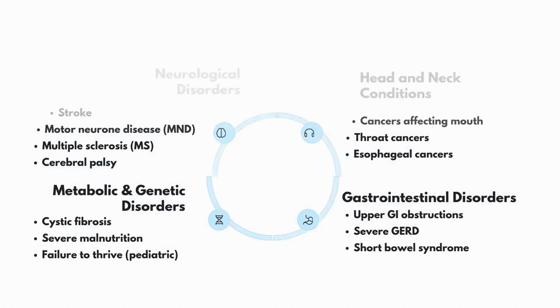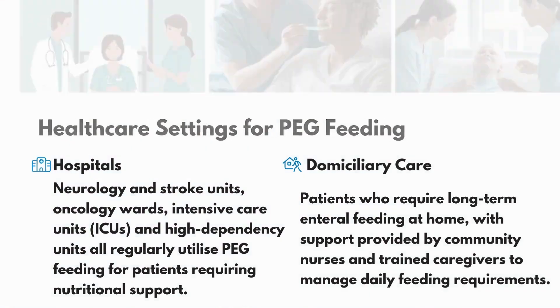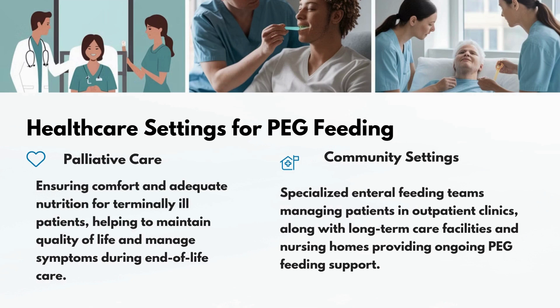PEG feeding is used across multiple healthcare settings. Hospitals — including neurology and stroke units, oncology wards, ICUs, and high dependency units — regularly utilize PEG feeding. Domiciliary care supports patients requiring long-term enteral feeding at home, managed by community nurses and trained caregivers. Palliative care uses PEG feeding to ensure comfort and adequate nutrition for terminally ill patients. Community settings involve specialized enteral feeding teams in outpatient clinics, long-term care facilities, and nursing homes.